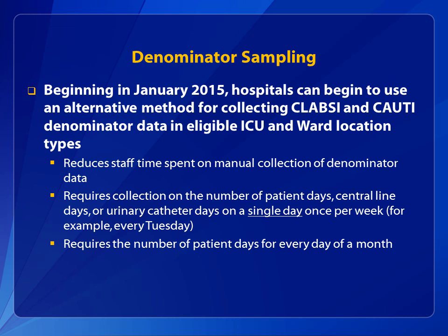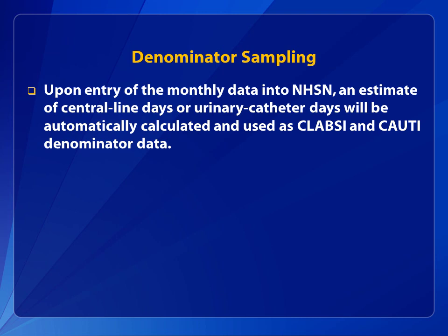While device day data can be sampled in this manner, hospitals using this method are still required to collect and report the total number of patient days for every day of the month. Upon entry of the monthly data into NHSN for the eligible location types, an estimate of central line days or urinary catheter days is automatically calculated and used as CLABSI and CAUTI denominator data for the month.